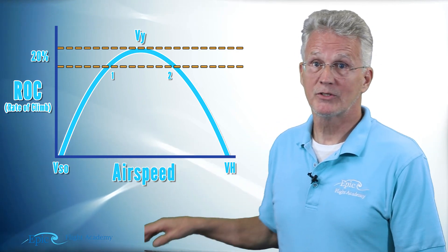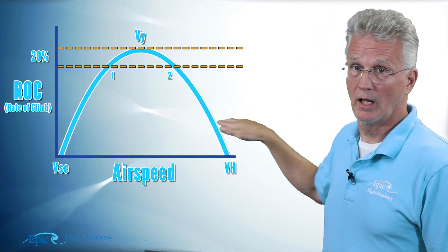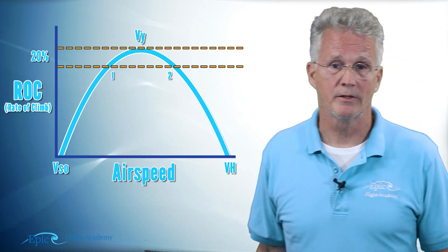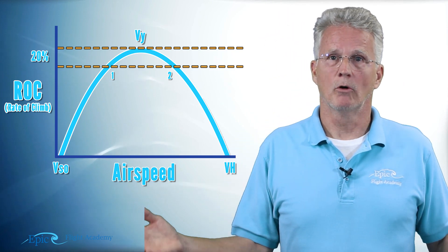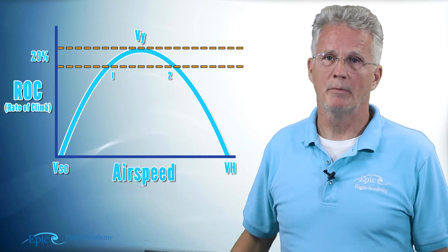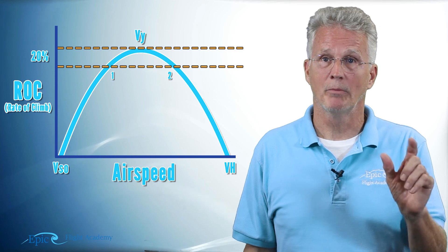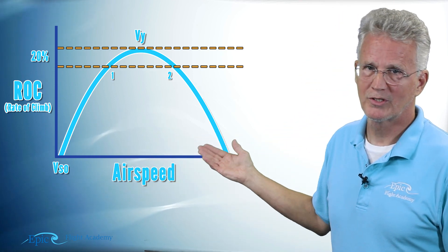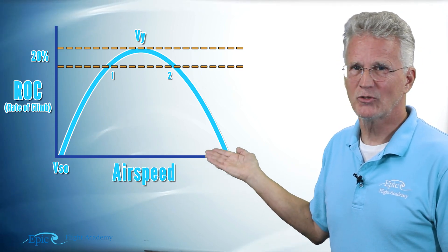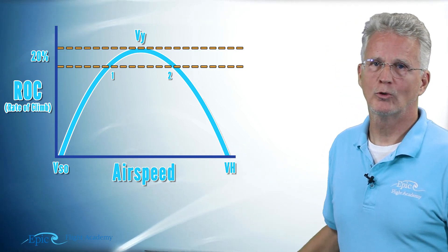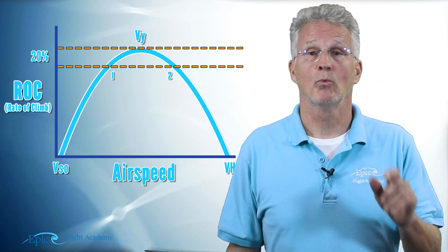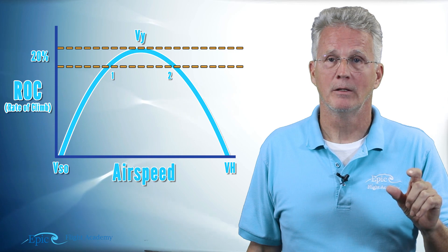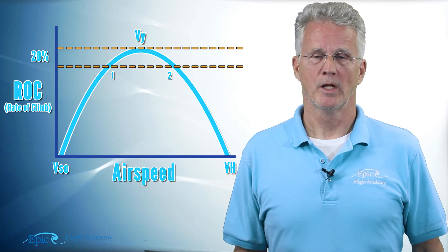We've taken a horizontal dash line between points one and two and come over to the left side of the chart. As we know by definition, my rate of climb has come down. How much? Approximately 20 percent. That's where our 20 percent reduction in the rate of climb comes from if we're at speeds above or below VY.